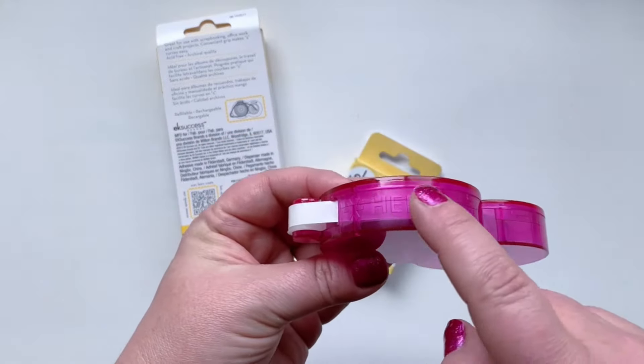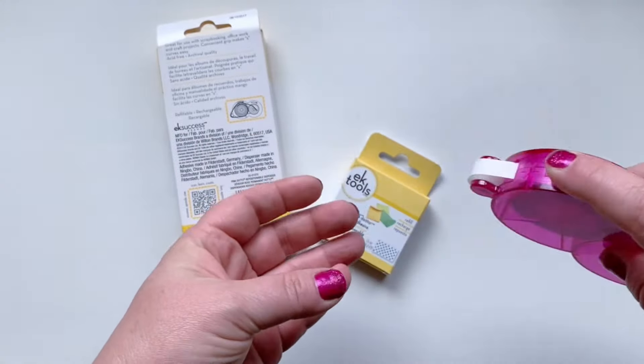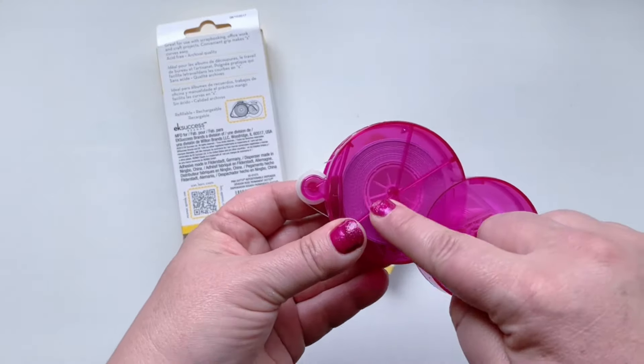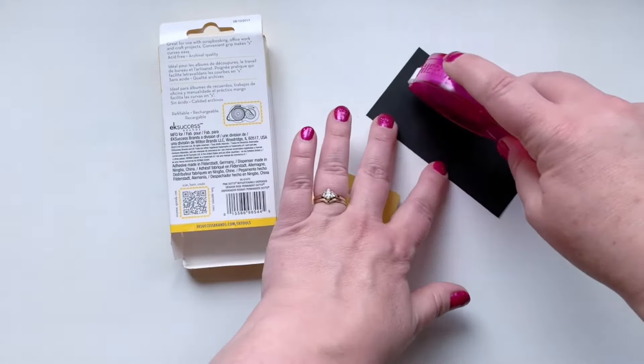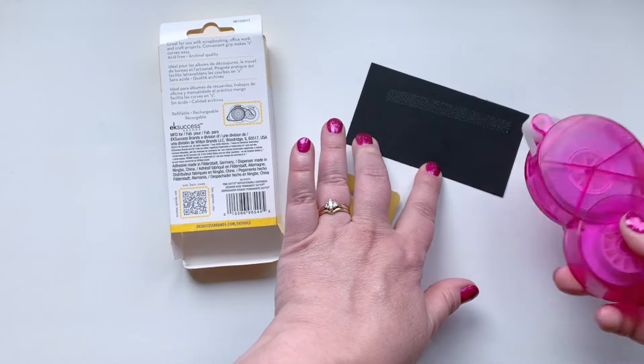The logo is embossed on the top of the cartridge showing you where to put your finger when you use it. Second, you can see through this cartridge to know how much adhesive you have left. This adhesive rolls onto your paper so smoothly.